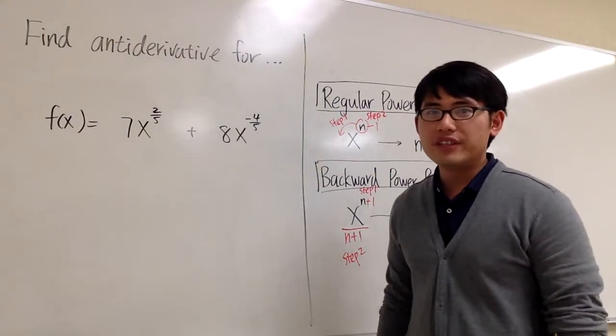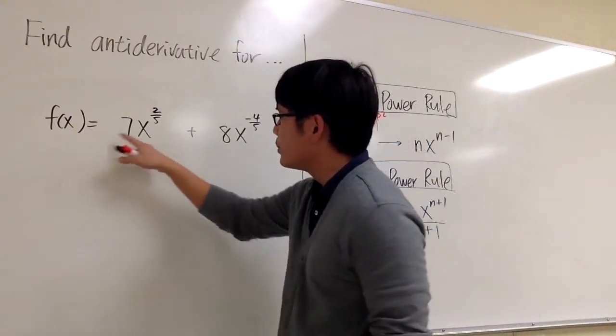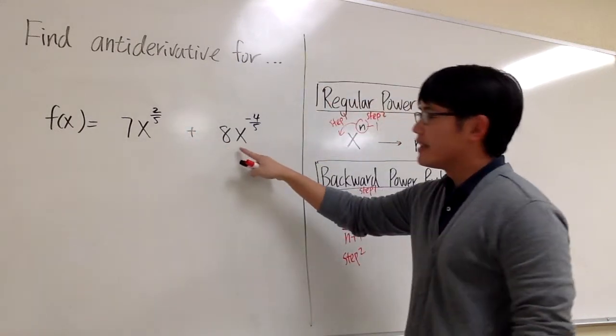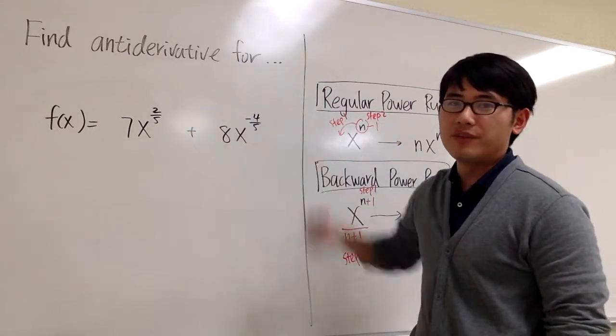We are going to anti-differentiate the function f(x) equals 7 times x to the 2/5 power plus 8 times x to the negative 4/5 power.